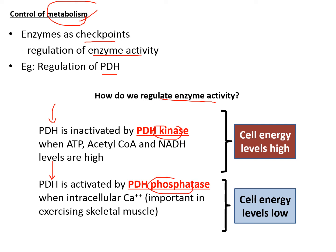In the case of PDH, when the cell has a high energy level — lots of ATP, acetyl coenzyme A, and NADH — these serve as signals that the cell has enough energy. To reduce the rate of metabolism, these molecules signal the phosphorylation of PDH, thereby inactivating it and reducing enzyme activity.